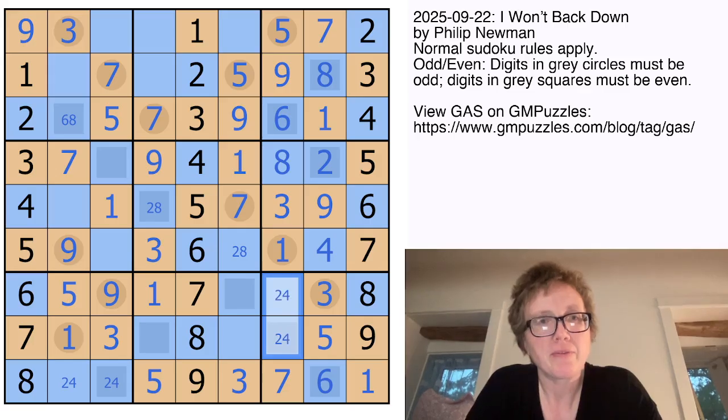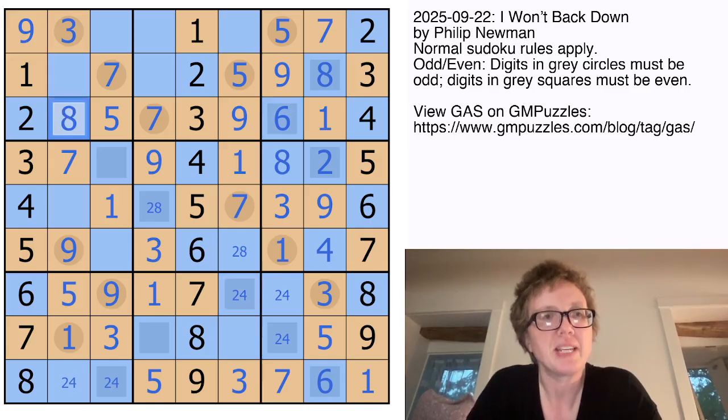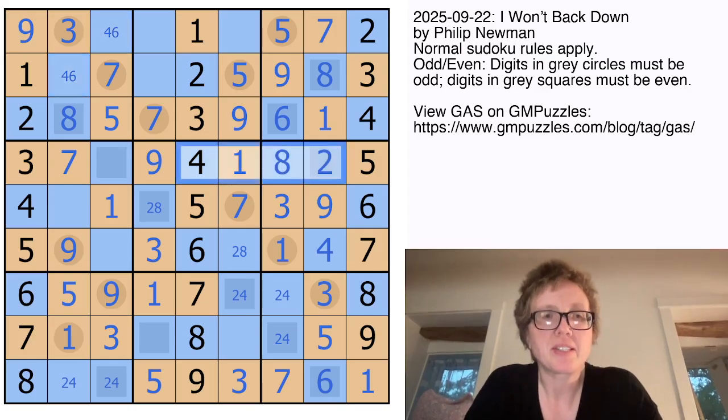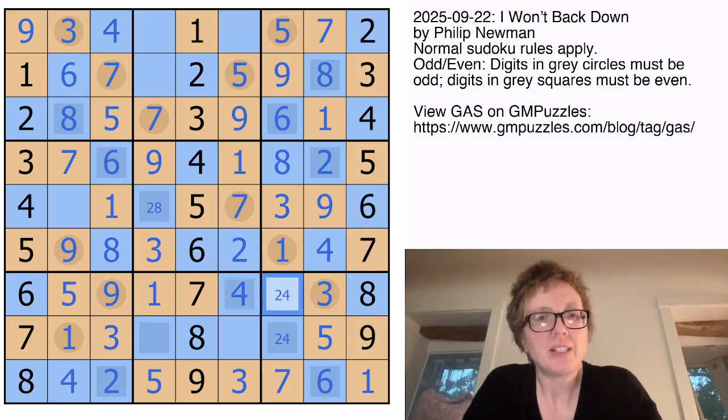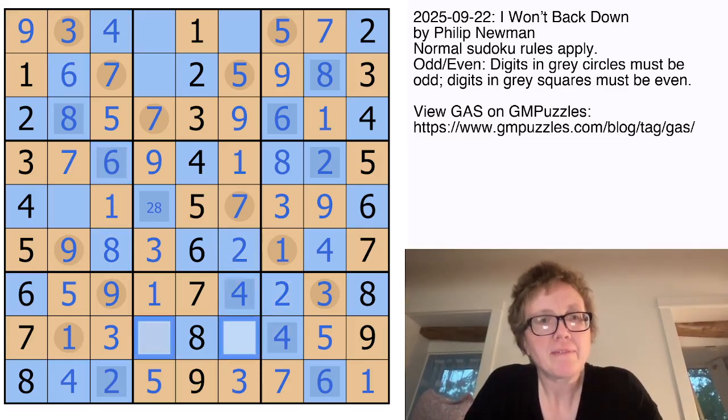So now these two have to be two and four. That also has to be either two or four. Ah, this six is going to turn that into an eight. These are going to be four and six in some unknown order, except that we still need a six in this row, so it has to go right there. And that will allow us to kind of bounce around the grid, filling in some of the pairs that we've established.